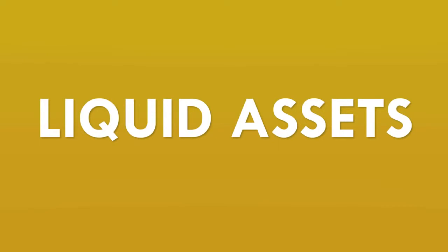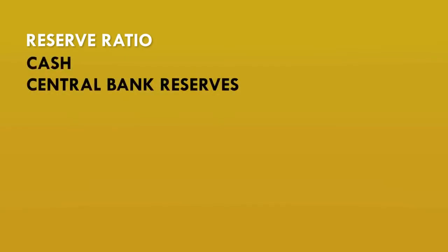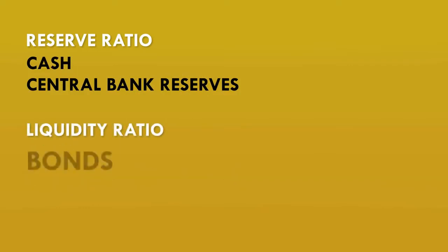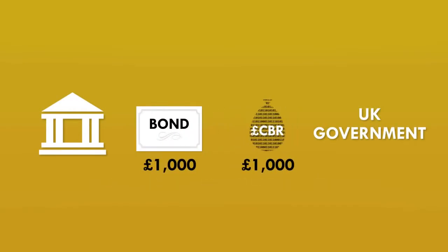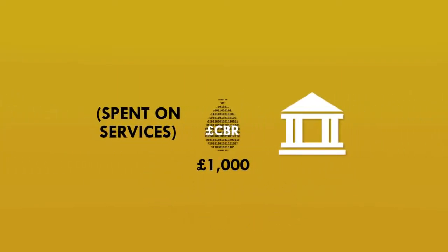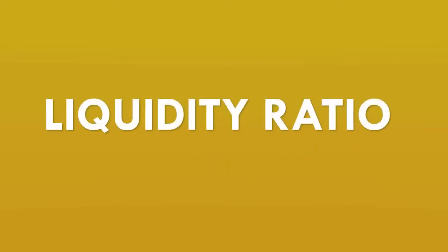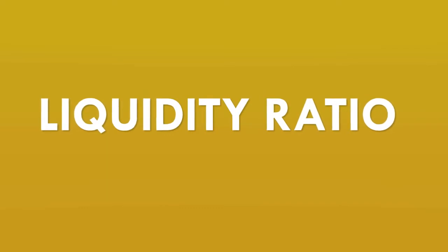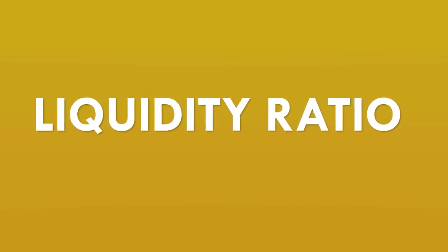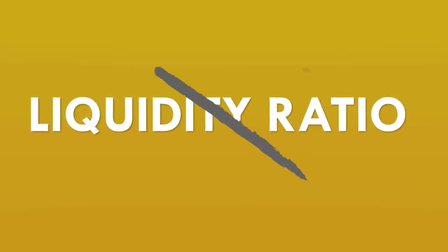Liquid assets include cash and central bank reserves, but they also include other things — in particular, government bonds. While the reserve ratio used in the textbook model requires banks to hold cash and central bank reserves in proportion to customer account balances, a liquidity ratio actually allows banks to use that cash and central bank reserves to buy bonds. The bonds also count towards the liquidity ratio, meaning a bank could hold no cash or central bank reserves and still meet the ratio. The key detail is that when a bank uses central bank reserves to buy bonds, those reserves then belong to another bank — they're not removed from circulation. This means a liquidity ratio has no limiting effect on the total amount of money the banking sector as a whole can create.